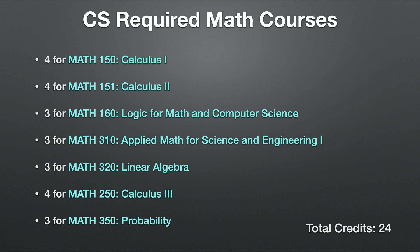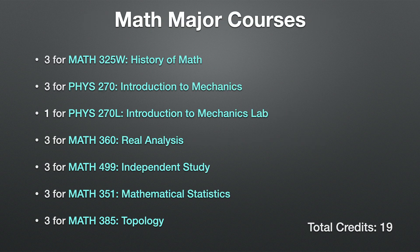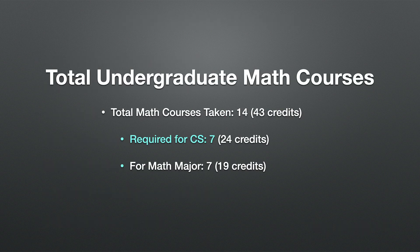Those seven courses equated to 24 credits. The math major courses — which were not required for my computer science degree — included history of math, introduction to mechanics, introduction to mechanics lab (because at the time my school required physics for the math major), real analysis, independent study, mathematical statistics, and topology. This equated to 19 credits, for a total of 14 math courses overall.